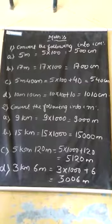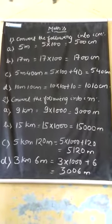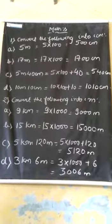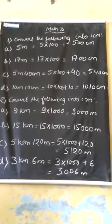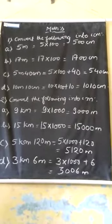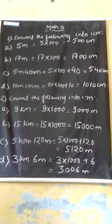Question number B: 17 meters. To change meter to centimeter, we multiply by 100. So 17 into 100, it will be 1700 centimeters.